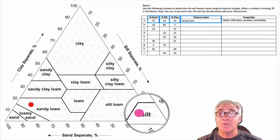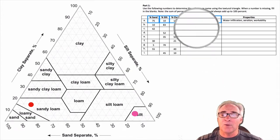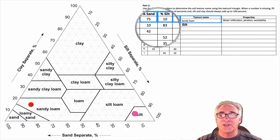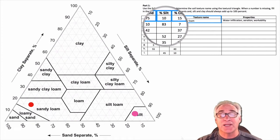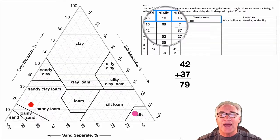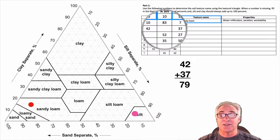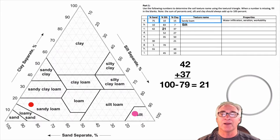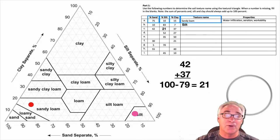That means it's going to be medium in its characteristics for water infiltration, aeration, and workability. So we've called the texture a silt. Now on letter C, we have a bit of a problem — we don't have the reading for percent silt, but we have the other two. We take 42 and add 37 to it, getting 79 — that's sand and clay added together. We subtract 79 from 100, and we get 21% silt. Then we put it right where it belongs.